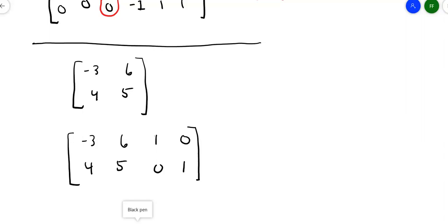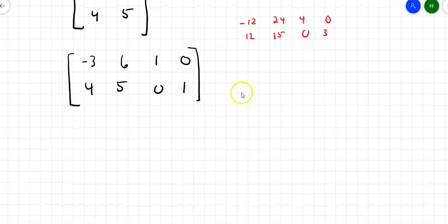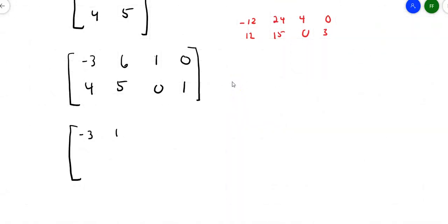So the first time around, we'll take 4 times row 1 plus 3 times row 2 — I'm not ready for fractions quite yet. So 4 times row 1 gives me negative 12, 24, 4, and 0. Then 3 times row 2 gives 12, 15, 0, 3. Adding those together, answer goes in row 2. Top row stays the same: negative 3, 6, 1, 0. Bottom row I get 0, 39, 4, and 3.